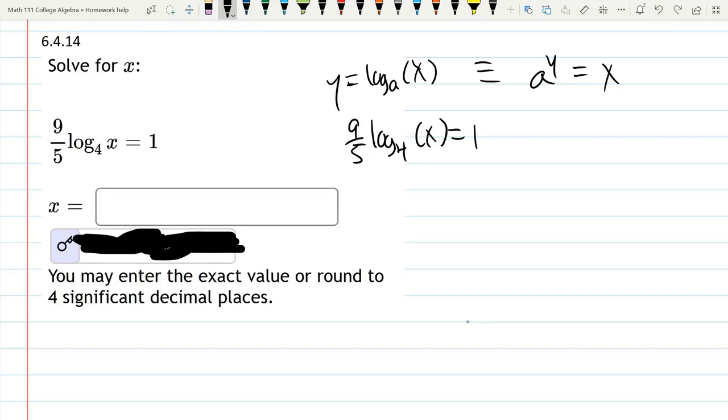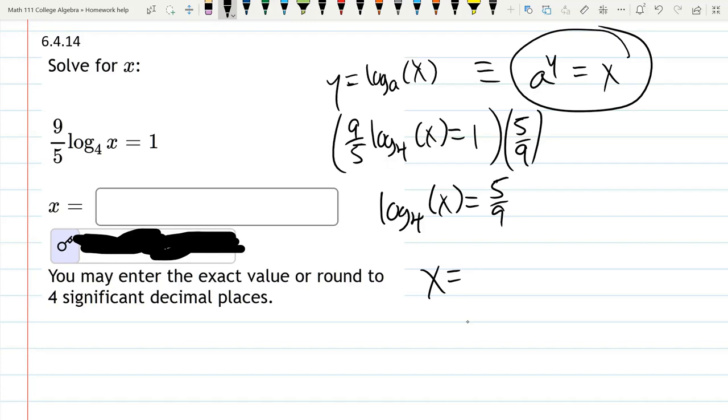We're going to multiply both sides of the equation by 5 ninths. That will cancel the 9 fifths to a 1. Log 4 of x equals 1 times 5 ninths is 5 ninths. Now we can move the base to the other side, and we're writing it as an exponential.